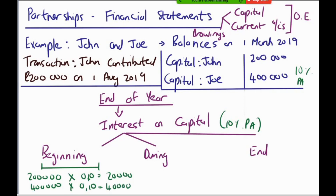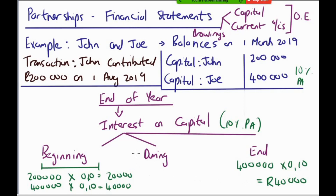For the end-of-year method: John contributed 200,000 on the 1st of August 2019, so at the end of the year John also has 400,000. If the calculation is based on the end-of-year balance, then both John and Joe would each get 40,000 interest on capital.